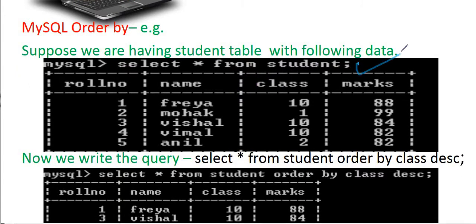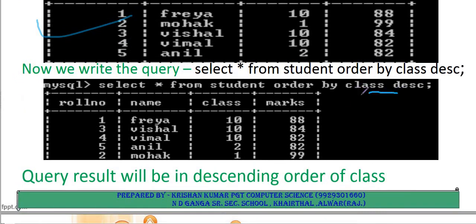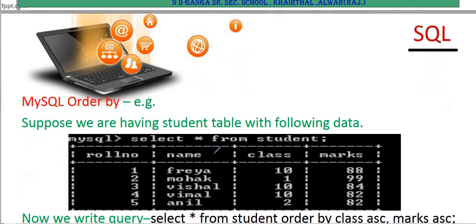For descending order: SELECT * FROM student ORDER BY class DESC — descending means decreasing order. So the class column is ordered as 10, 10, 10, 2, 1.